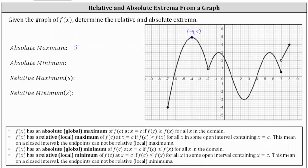Notice how the lowest point on the graph is the left endpoint, this closed point here, where the ordered pair is negative seven comma negative four. The y value or function value of negative four is the absolute minimum, which occurs at x equals negative seven.